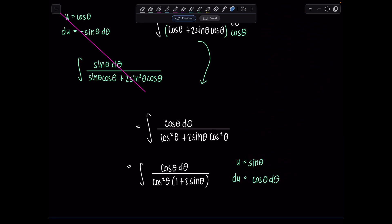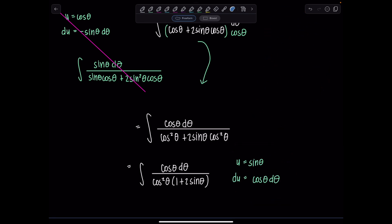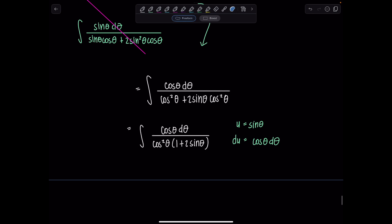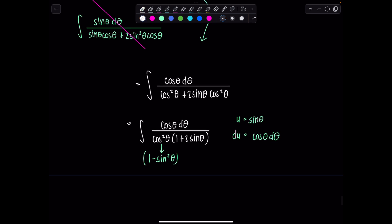u is going to be sine theta. du is cosine theta d theta. And that's not a problem because this I can write as 1 minus sine squared theta. So now my integral simplifies to, instead of cosine theta d theta in the numerator, just du. And then the denominator is going to be 1 minus u squared times 1 plus 2u.